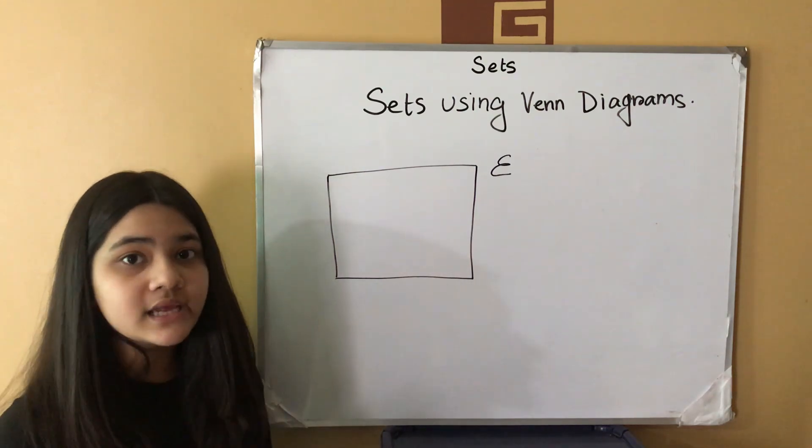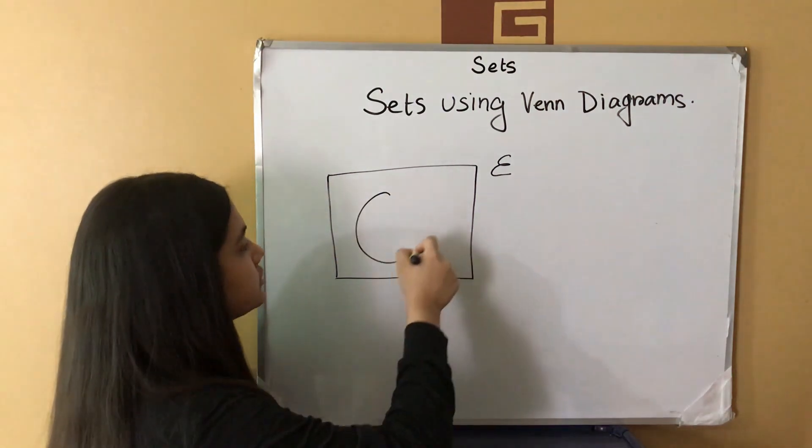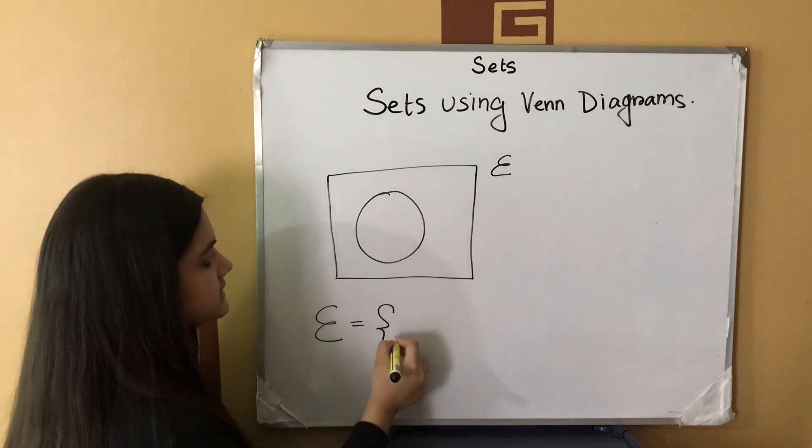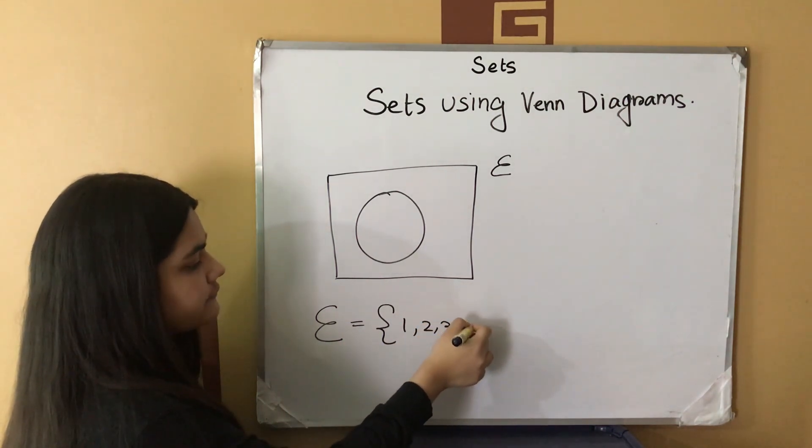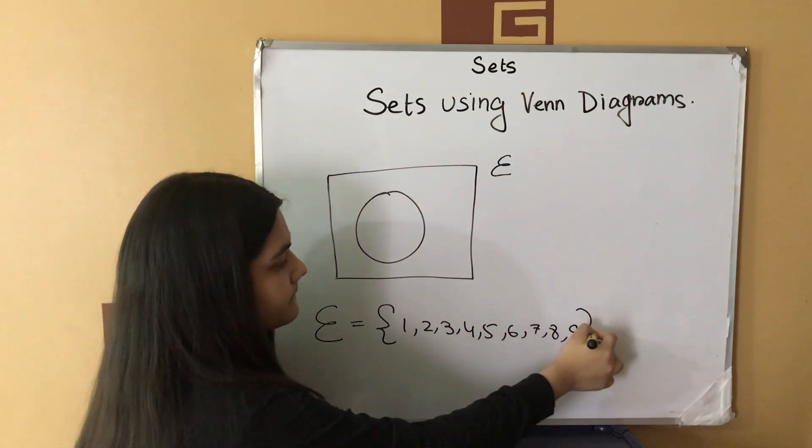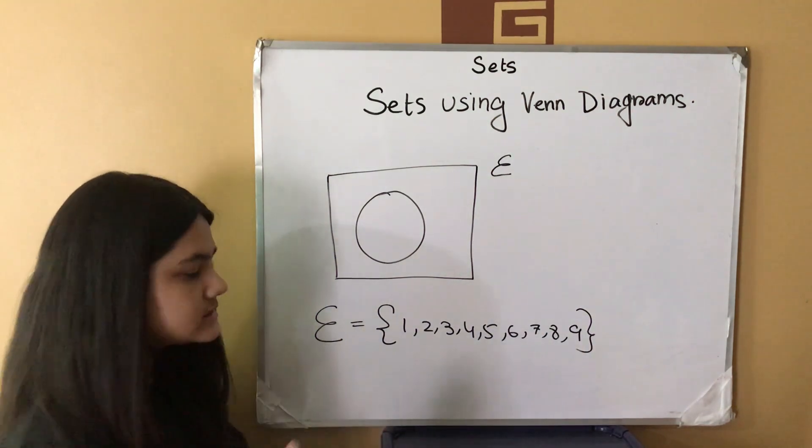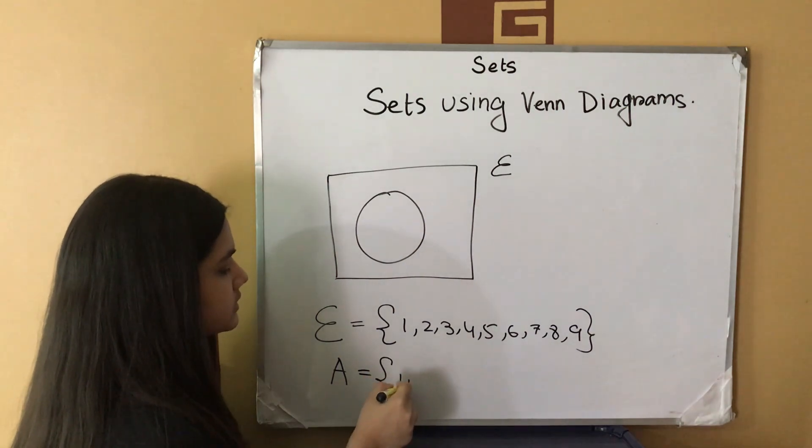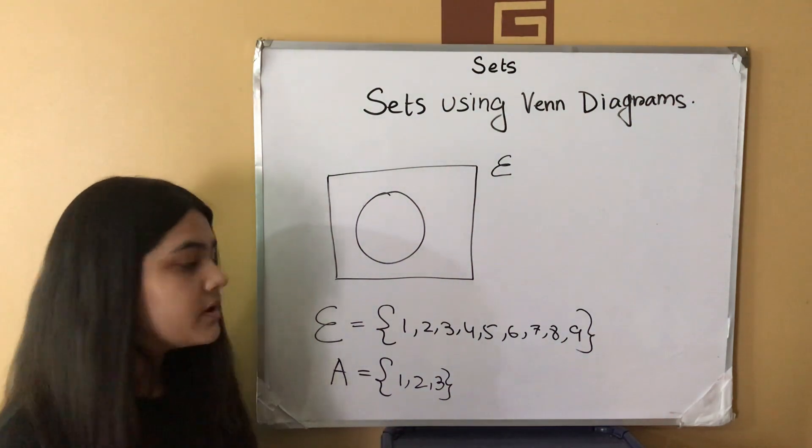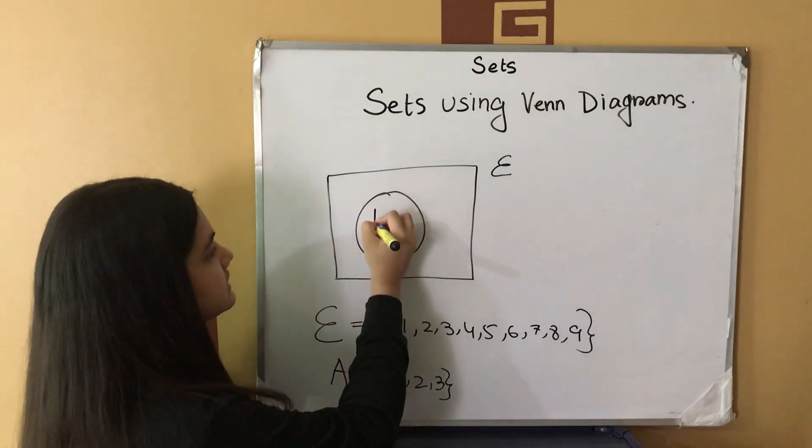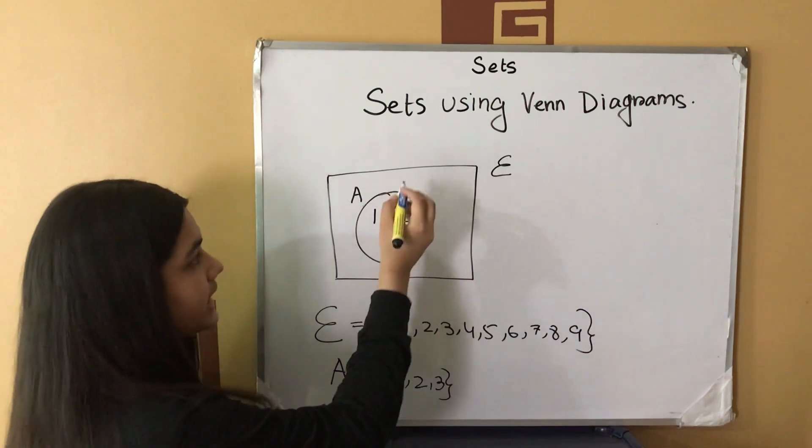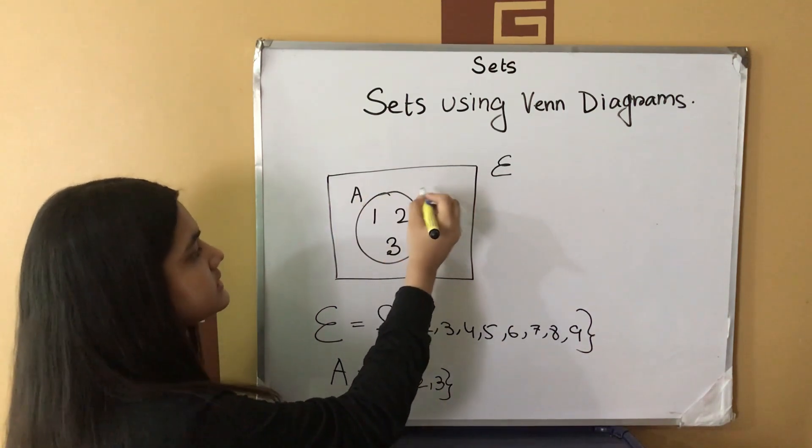Then, within the universal set, we draw circles to represent other sets. Suppose this is a universal set and it contains the elements 1, 2, 3, 4, 5, 6, 7, 8 and 9. And, we have another set A which contains the elements 1, 2 and 3. We can represent this using a Venn diagram. We will write the elements 1, 2 and 3 inside the circle and label it as A.